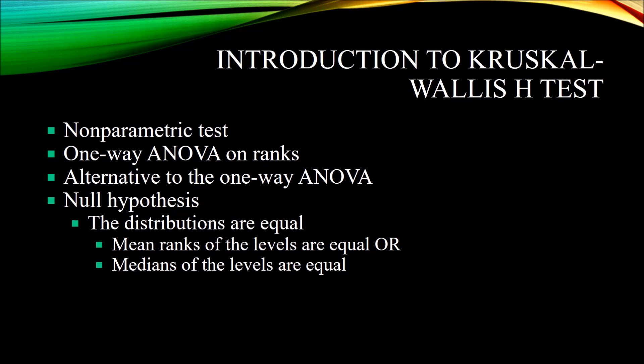The Kruskal-Wallis H-Test has one null hypothesis, and that is that the distributions are equal. However, we can think of this in two ways, depending on whether or not the data meet a specific assumption — the assumption that the distribution shapes are similar. If the data do not meet that assumption, the null hypothesis would be that the mean ranks of the levels are equal. If the shapes of the distributions are similar, the null hypothesis is that the medians of the levels are equal.